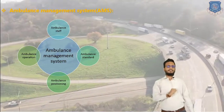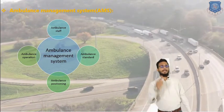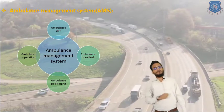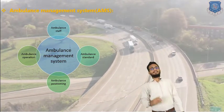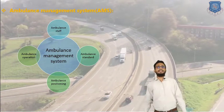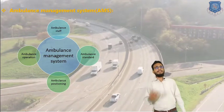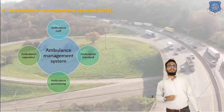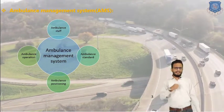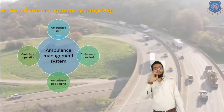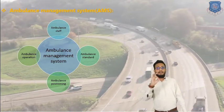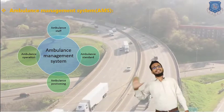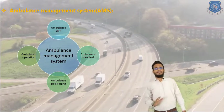In ambulance staff, there are mainly three persons: the ambulance operator, which is the driver; second is the nurse or compounder; and third is the assistant medical officer. These three persons form the ambulance management staff. The second pillar is ambulance standards. Ambulance standards are designed for properly helping the patient with basic and medical treatments.